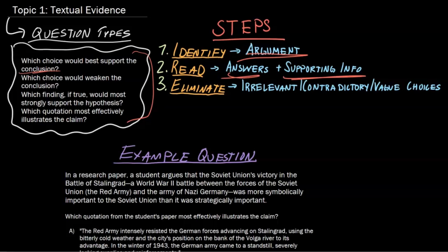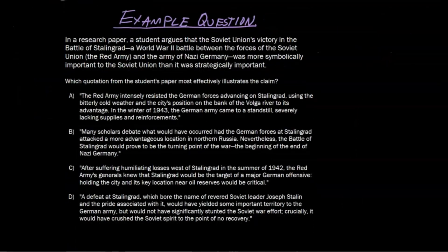Then you'll eliminate choices that either go against your argument or that don't make sense with the supporting info. You might have a choice that argues the same thing, but uses completely different evidence to argue that thing — and that's going to be an incorrect choice.